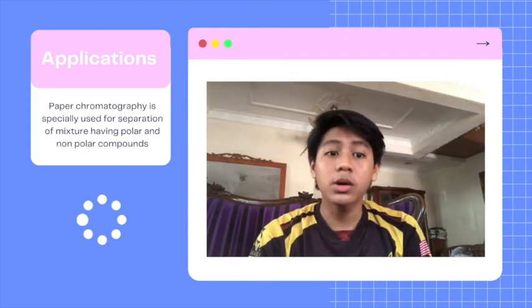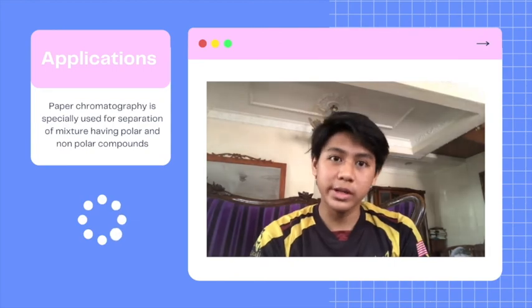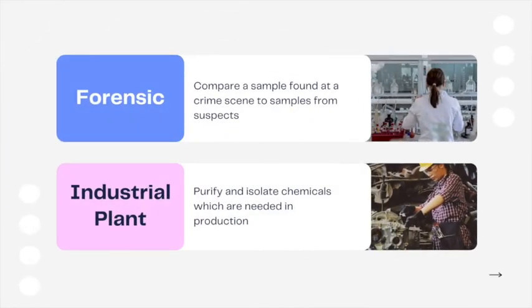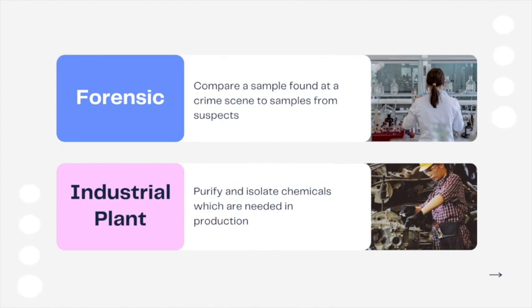Now, let's take a look at some real life examples of the paper chromatography applications. Firstly, it is in fetology and forensic science. Next is in the manufacturing plant. Paper chromatography is used to purify and isolate a chemical needed to make the product.